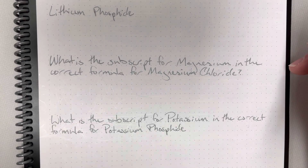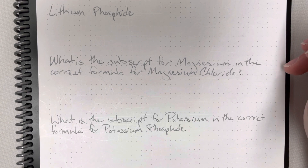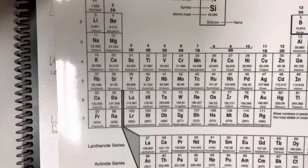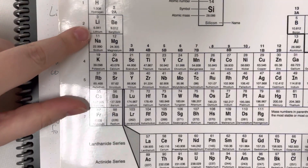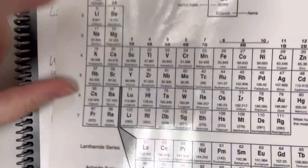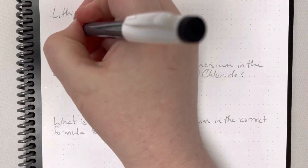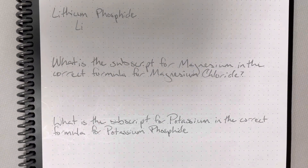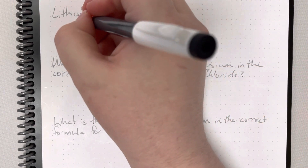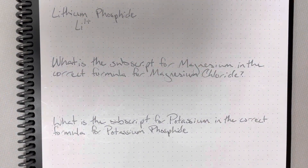Finding the formula for lithium phosphide: the first thing I need to do is find the chemical symbol for lithium. Referencing the periodic table, lithium's symbol is Li and it is in column 1, which means it has one valence electron. It's going to give away that one valence electron — giving a gift is a nice thing to do — so it's going to have a positive 1 charge.